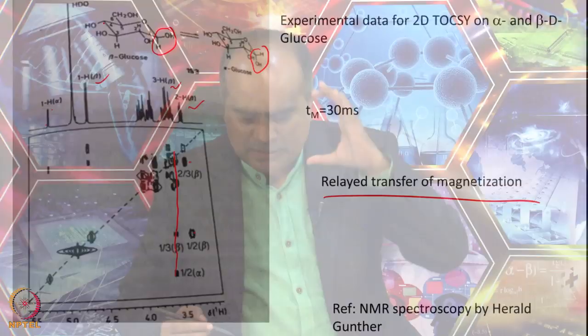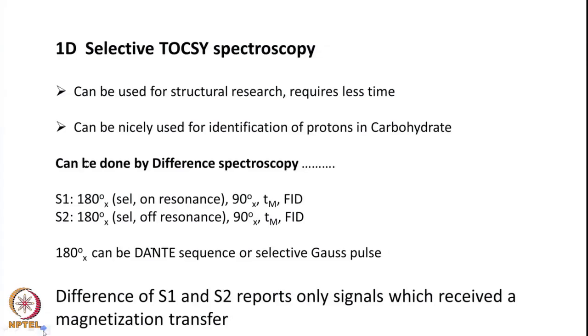These concepts will be discussed in detail when we start looking at 2D experiments such as COSY, TOCSY and others. At the moment, this concept is important because we can now achieve correlation between 3-bond and 4-bond couplings. A simplified version can be done in 1D fashion — the 1D selective TOCSY experiment. TOCSY is total correlation spectroscopy. It is the same spin-lock period: 90-degree pulse, spin-lock period, and detection. This can be used for structural information, and since 2D takes about 3 hours, the 1D version saves lots of time.